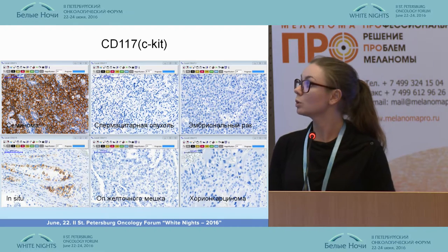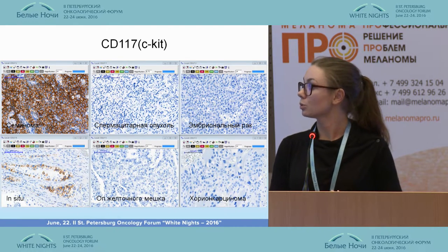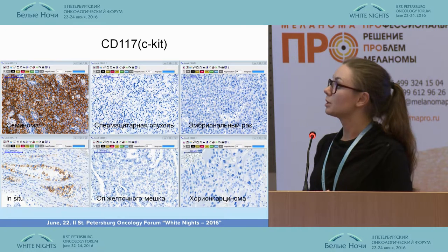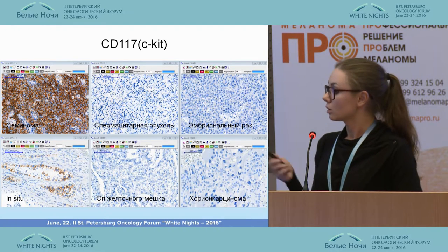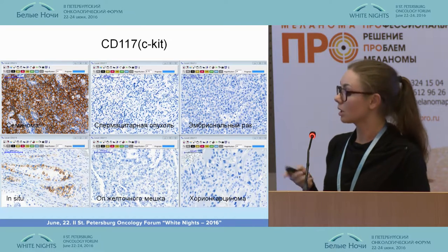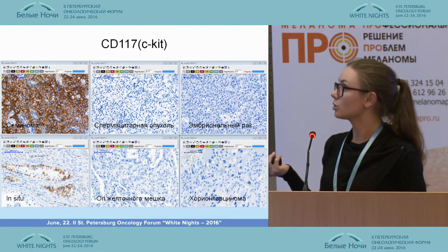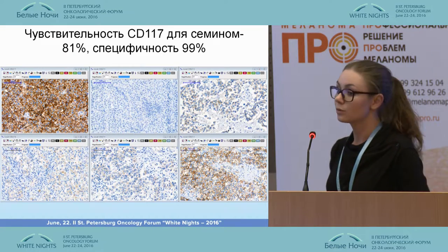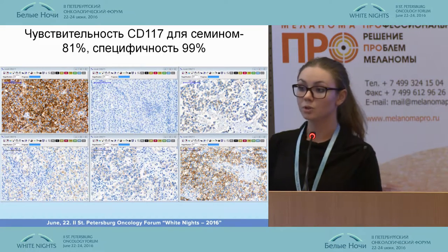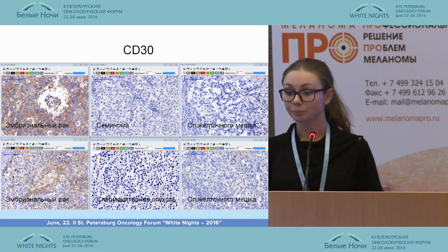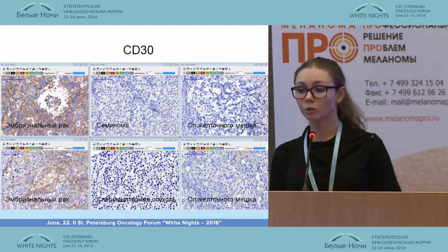CD117 (c-kit) is very sensitive for seminoma; it colors only the cells in seminoma and neoplasia. According to the literature, other types of tumors may show positive coloring, but we did not observe that in our work. Sensitivity is almost 100 percent and specificity is 99 percent.